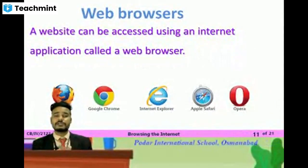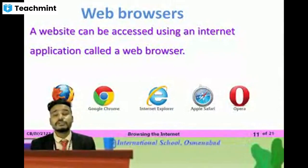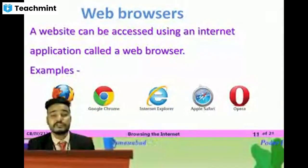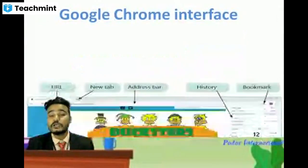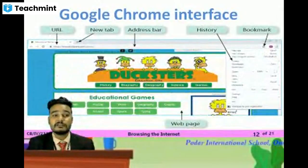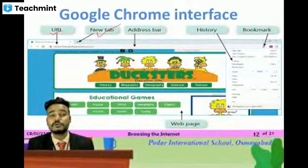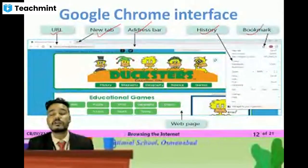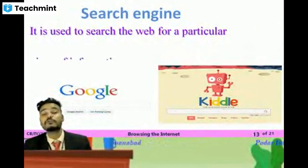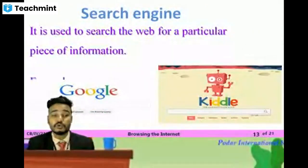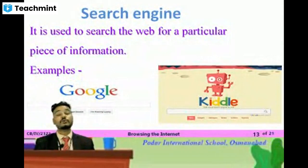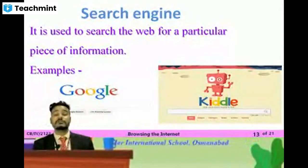There are a number of application software called web browsers which are used to access the internet. We had learned about how Google Chrome looks — the URL bar, the new tab bar, the address bar, the history button, and bookmarks. We also learned about search engines. Google is not a browser — Google is a search engine. Google Chrome is the browser.